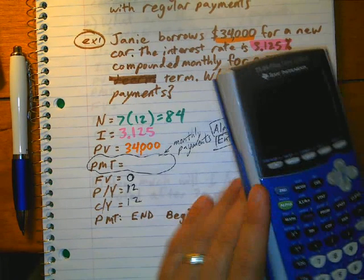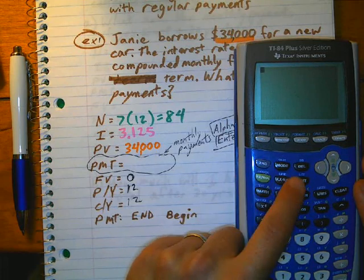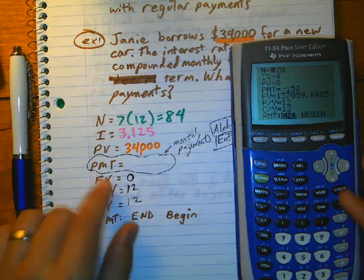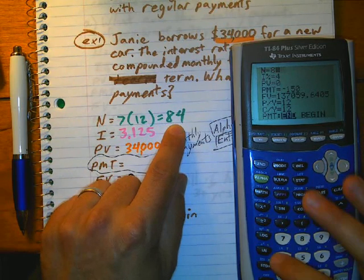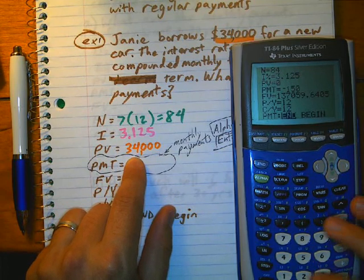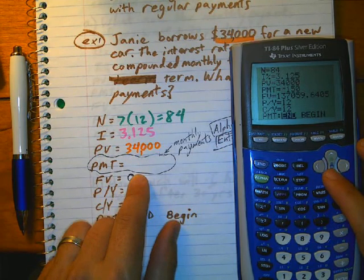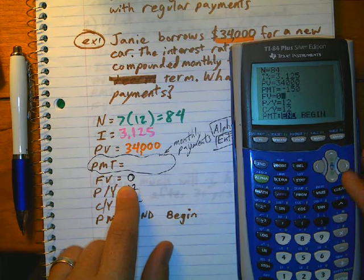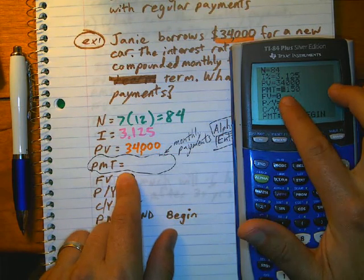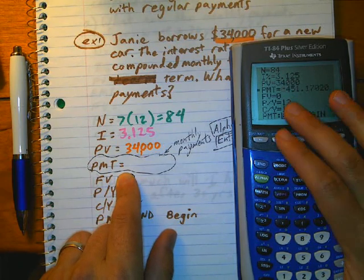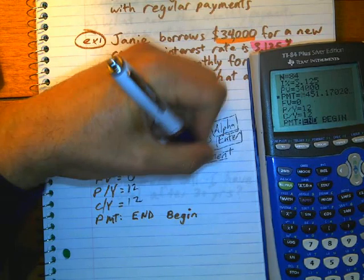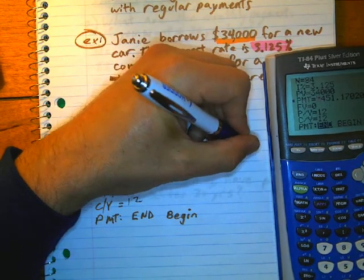Let's put this in and see what our loan payment is going to be. We hit alpha, and then one for finance, and then one for TVM Solver. So N is 84. The interest is 3.125. The present value, I'm going to write $34,000. PMT, we don't know. Future value is zero. 12 and 12. I'm going to go back to PMT, and I'm going to hit alpha, enter,